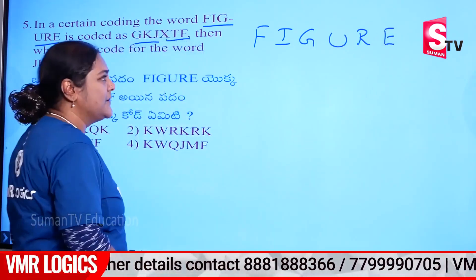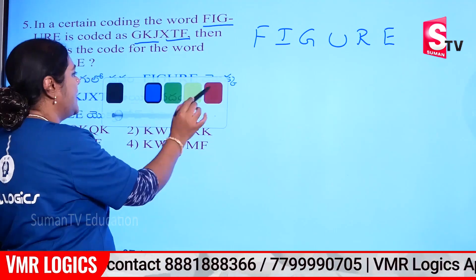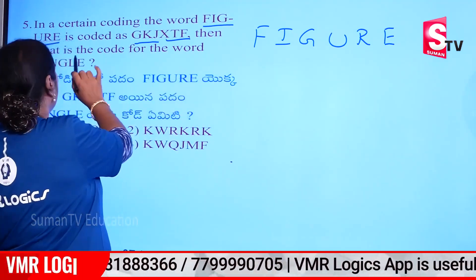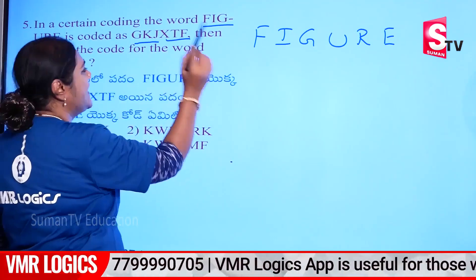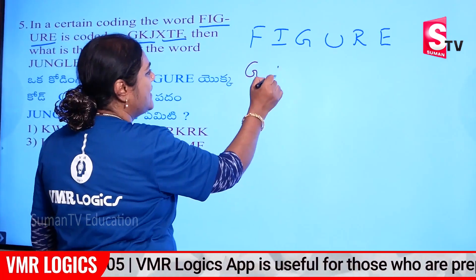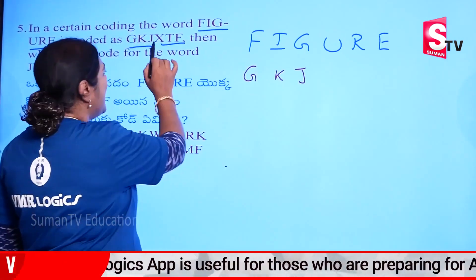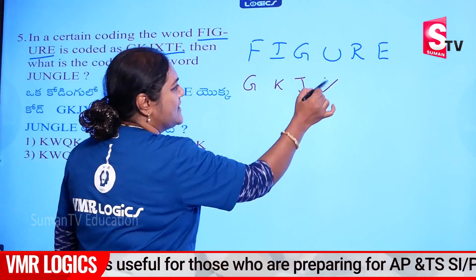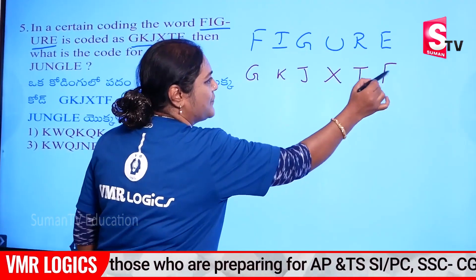This is the code A letters. Here it is: G, K, J, G, K, J, X, T, F. X, T, F.